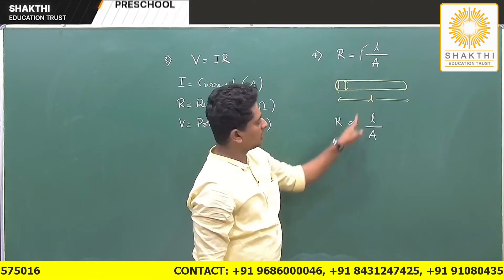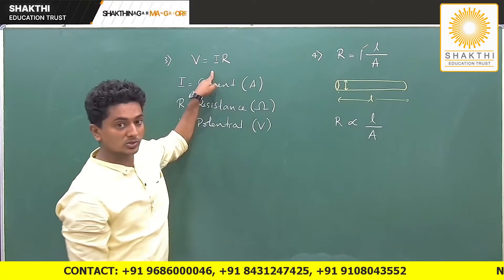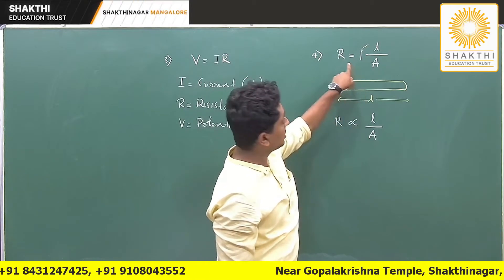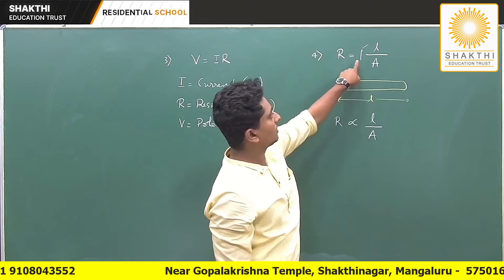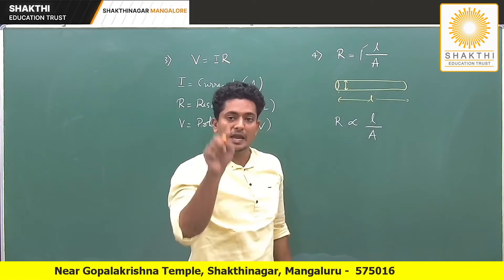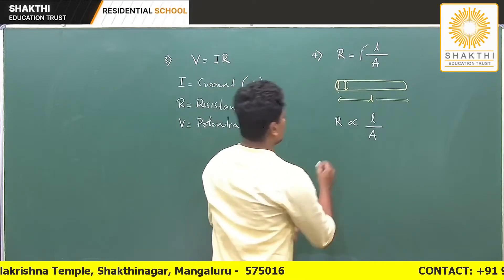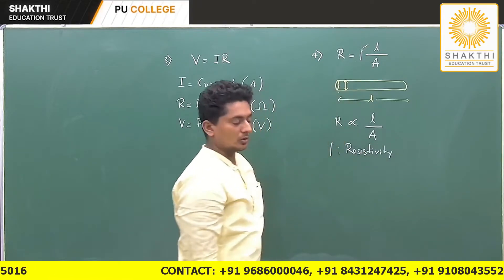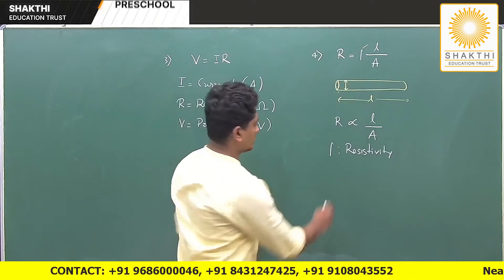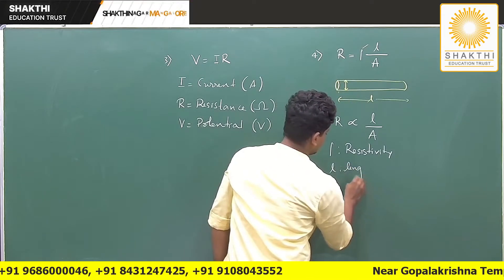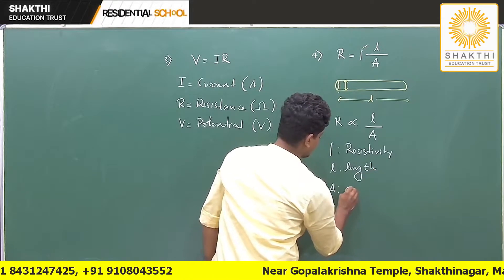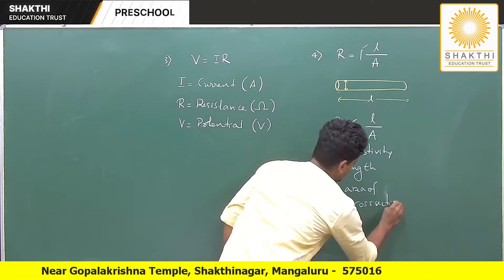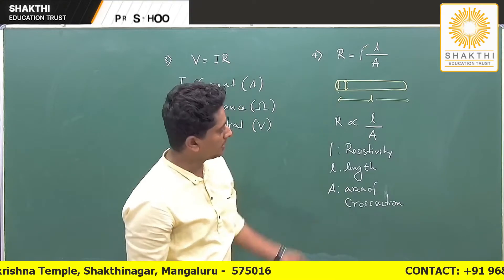Rho (ρ) is known as resistivity, so the formula is R = ρL/A, where L is length and A is area of cross section. I hope this is clear.